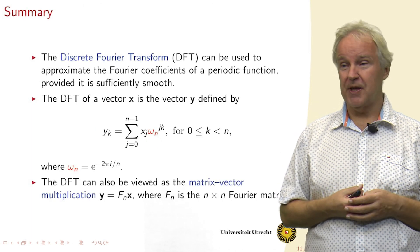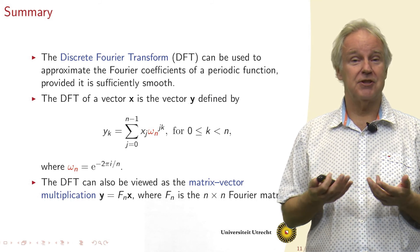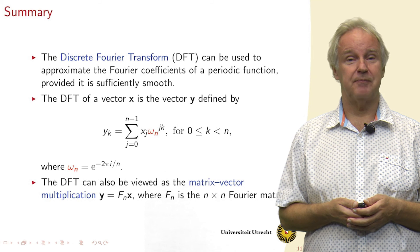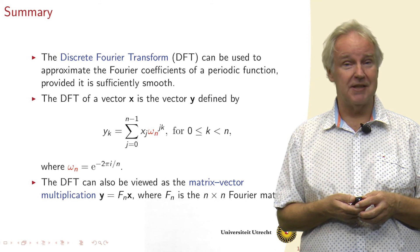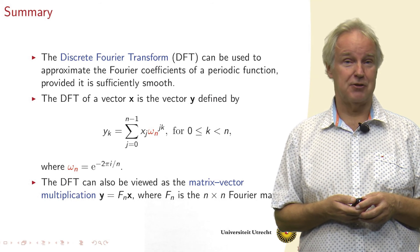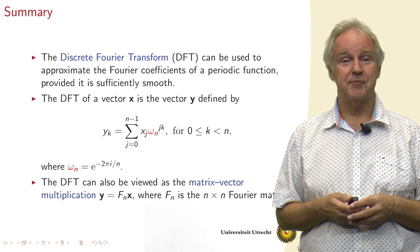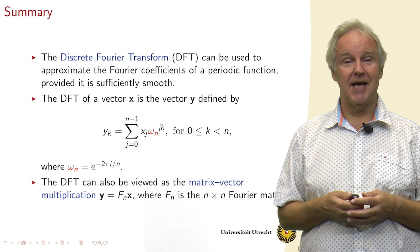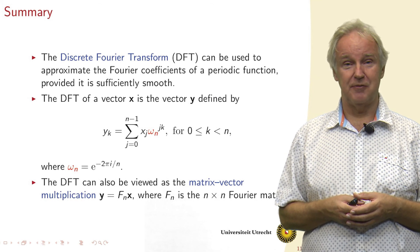To summarize, we can use the discrete Fourier transform to find the periodic expansion and the corresponding Fourier coefficients of a periodic function, provided that function is sufficiently smooth. And the DFT is then defined by y equals the sum of j equals 0 to n minus 1 of xj times omega n to the power j times k. And omega n is defined as e to the power minus 2 pi i divided by n. And we also can view this DFT as a matrix vector multiplication with the Fourier matrix.